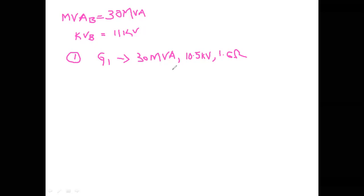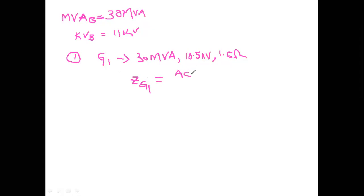For generator one, the problem has not mentioned 1.6 as a per-unit value — he has given 1.6 ohms, which is the actual value. We have two important expressions: one for when a per-unit value is given, and one for when an actual value is given. In this case generator one has 1.6 ohms as actual value, so to find the per-unit value at G1 we use: Z_G1 (per unit) = Z_actual / Z_base.